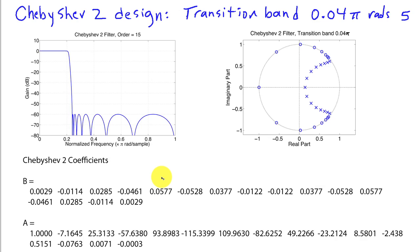As I've shown here, we have a transition bandwidth of, again, 0.04π radians as before. And in this case, we still get a pretty high order filter. It's order 15, but it does look as if it still satisfies the specifications.